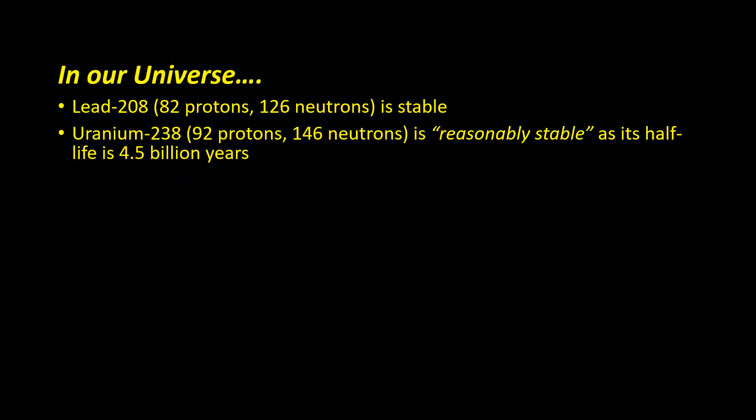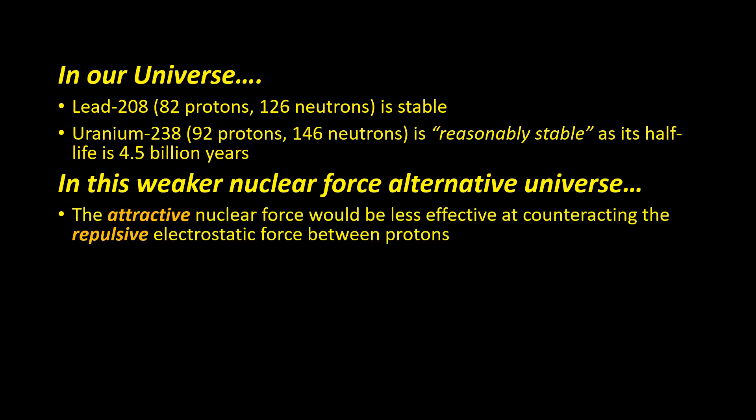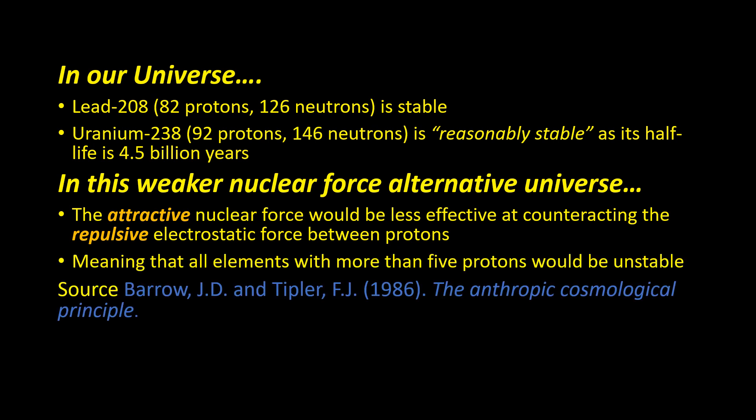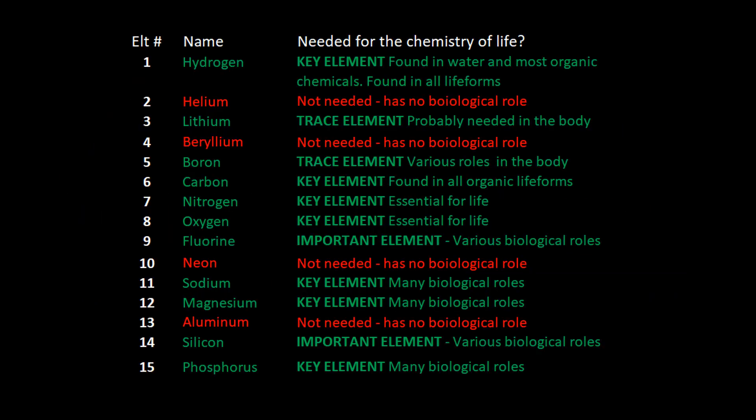As we've seen in our universe, lead-208 is the heaviest stable nucleus, and Uranium-238, which has 92 protons and 146 neutrons, is reasonably stable. But in this alternative universe, the attractive nuclear force would be less effective at counteracting the repulsive electrostatic force between protons, meaning that all elements with more than five protons would be unstable. The elements to support the complex chemistry on which life is based just wouldn't exist in this universe.